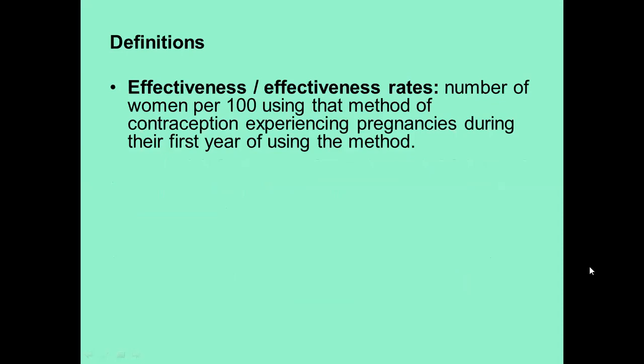Effectiveness rate is the number of women per 100 using that method of contraception who experience pregnancies during their first year of using the method. So if using method A, the effectiveness is 4%, that means 4 women out of 100 using that method fell pregnant. It's always referred to as the first year of using that method.